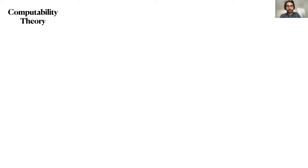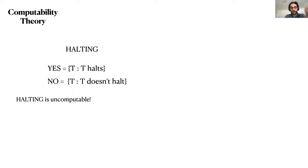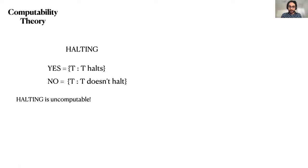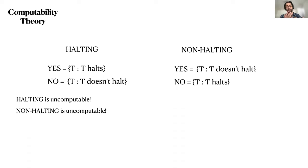Now I have to give you a crash course on computability theory — the theory that gives us the language and tools to compare the degrees of uncomputability of problems. You may have heard of the halting problem. It is a decision problem: the yes instances are Turing machines that halt, and the no instances are Turing machines that do not halt. The problem asks, given a Turing machine, decide whether it is a yes instance or a no instance. This is a notoriously difficult problem — we know it is uncomputable. There is another problem called the non-halting problem, where we just switch the labels yes and no, so the yes instances are those Turing machines that do not halt.